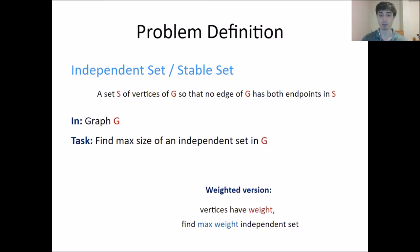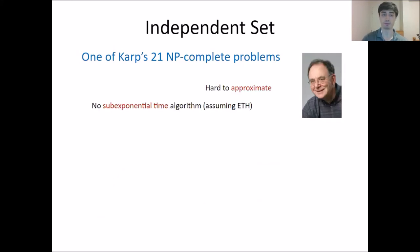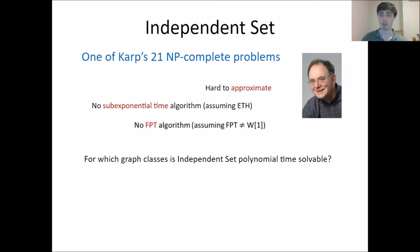There's also a weighted version of this problem. The vertices now have weights on them, and our job is to find a maximum weight independent set. Independent set is a classic problem — it's one of Karp's original 21 NP-complete problems. It's hard to approximate, it doesn't have a sub-exponential time algorithm assuming ETH, and it has no fully polynomial time algorithm.